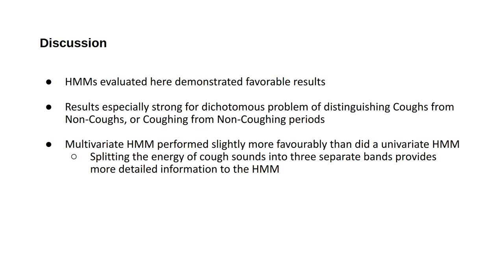You can read more in the paper for full detail. Generally, we got favorable results for dichotomous classification. Setting aside fine-grained classification by individual phase — whether phase A, B, or C, which has some ambiguity — and just dealing with cough versus non-cough or coughing versus non-coughing, we can do very well. Multivariate HMMs are slightly preferable.